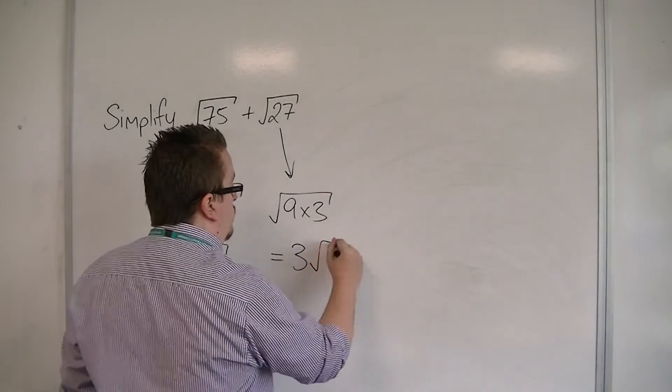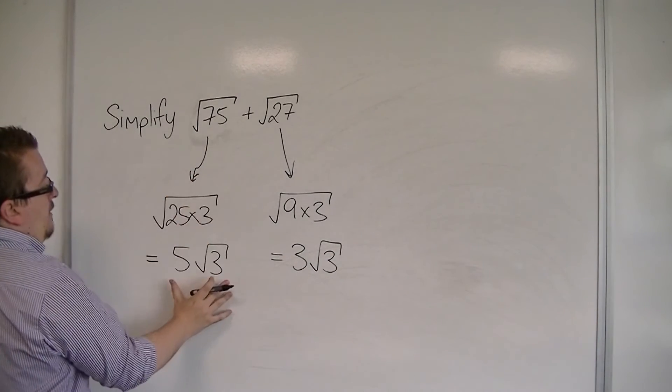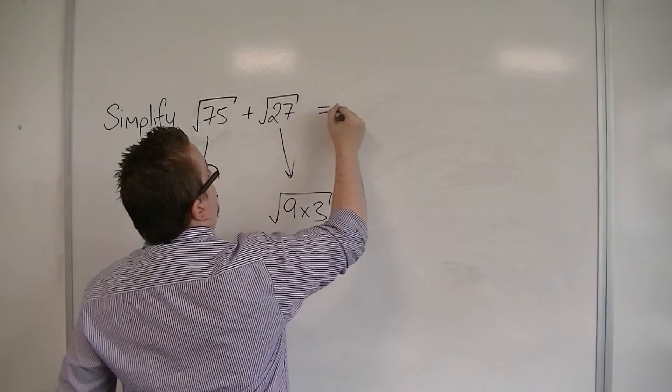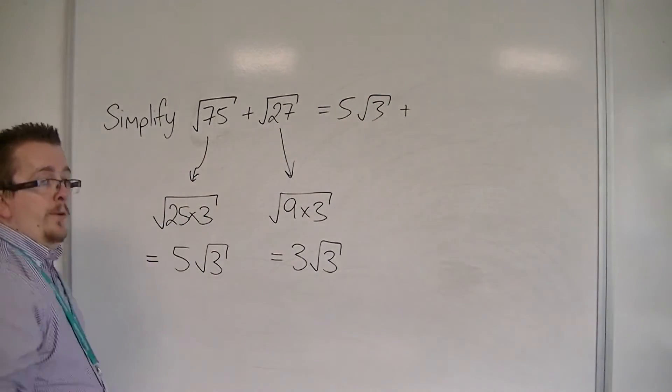We have 3 root 3. So what we have is root 75, which I know is 5 root 3, plus root 27, which I know is 3 root 3.